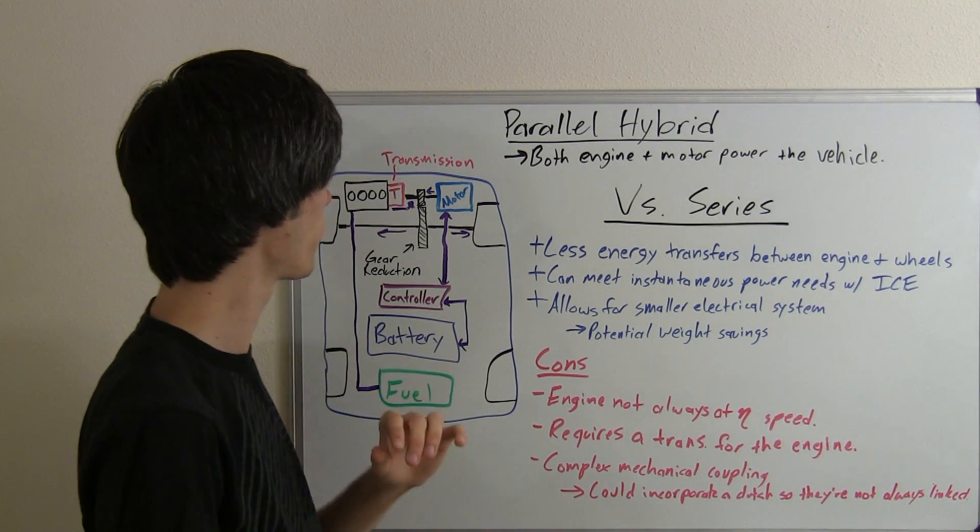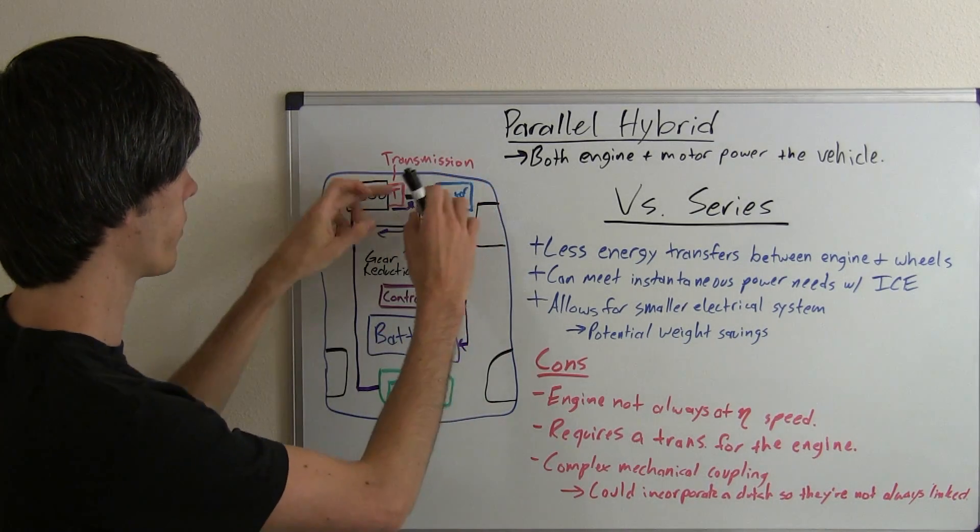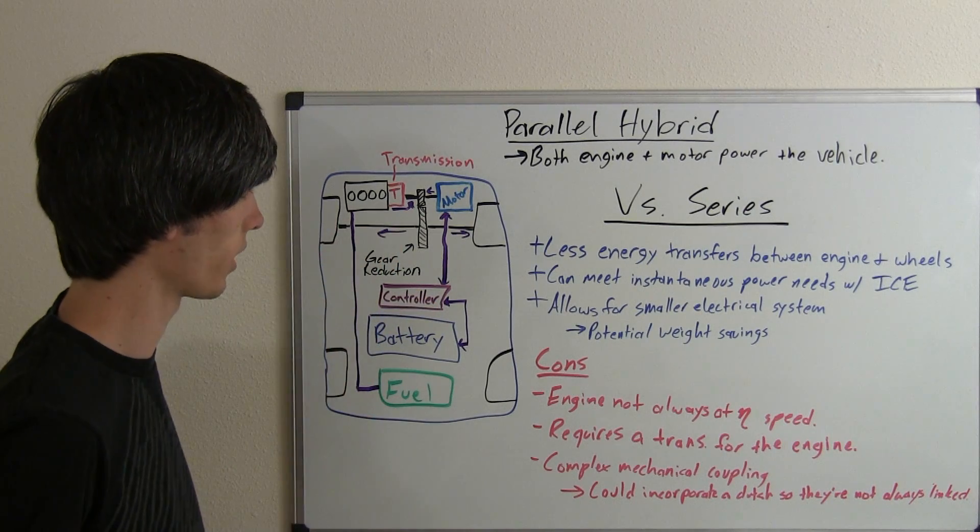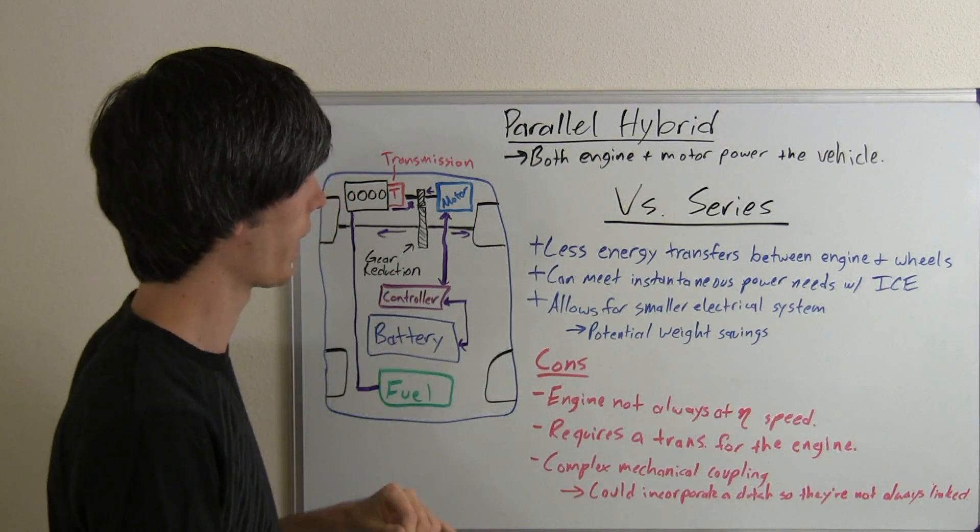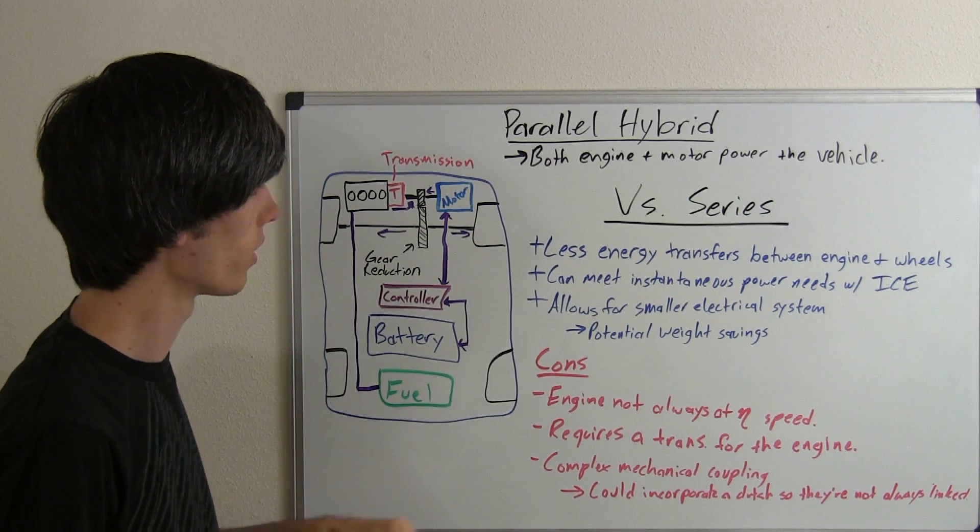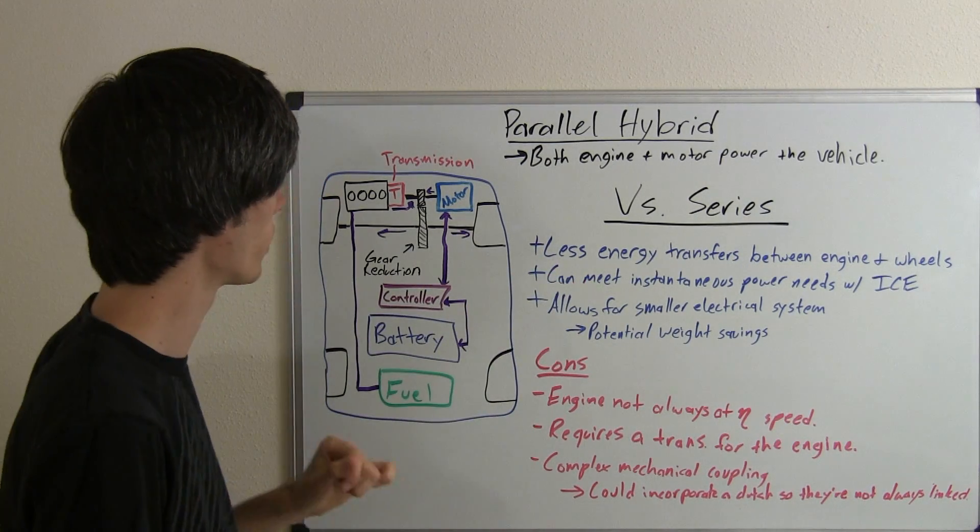So you can see that it's a little bit different from the series engine as both of these can power the wheels at the same time. So why would you want to parallel over a series type hybrid? Well there's less energy transfer between the engine and the wheels.